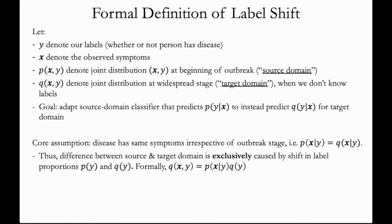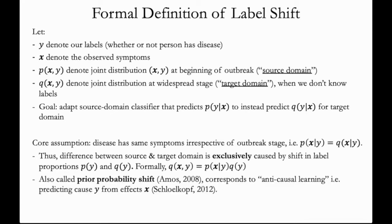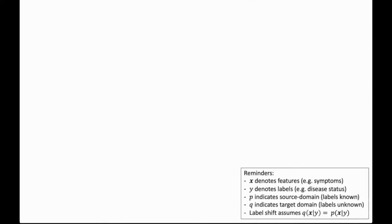Formally, q(x, y) equals p(x|y) times q(y). This is also called prior probability shift and it corresponds to anti-causal learning, that is predicting the cause y from the effects x. And it's appropriate here because diseases cause symptoms. That's a lot of notation, so I've summarized it in the lower right there.